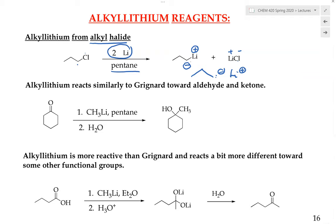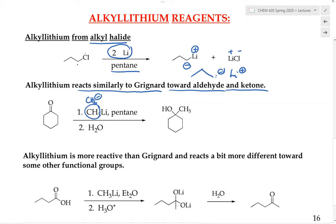Now let's go over the chemical reactivity of the alkyl lithium reagent. They behave similarly to the Grignard reagent towards aldehyde and ketone functional groups. If we have an aldehyde or ketone and react it with, in this case, methyl lithium in the presence of pentane followed by water workup, we can convert it into the tertiary alcohol. This reagent is very nucleophilic — in fact even more nucleophilic than the Grignard reagent. It attacks the carbonyl and following protonation of the alkoxide, we produce the tertiary alcohol when starting from a ketone.